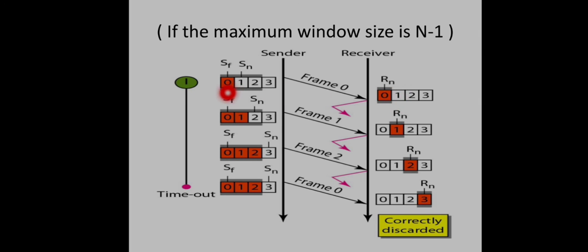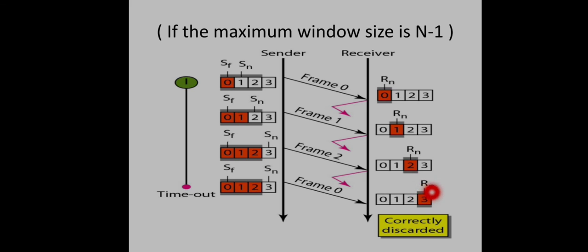All 3 frames are sent by the sender, but all corresponding acknowledgements are lost — just like the previous case. After some time the sender times out and retransmits frame 0. But here, the next frame expected by the receiver is sequence number 3, since it has advanced to the next window starting from frame 3. So when frame 0 arrives again at the receiver, it is not the expected frame and is simply discarded. This shows the protocol works correctly with window size 2^n − 1.